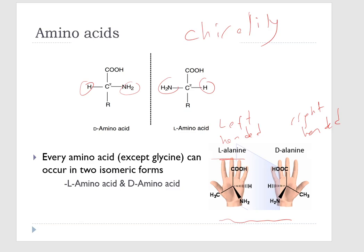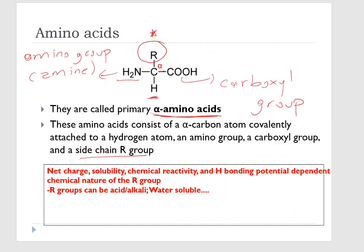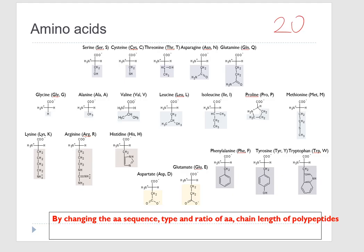Glycine is the exception — it's the simplest amino acid. It has no stereoisomers because it has two hydrogen atoms attached to the central carbon atom, so the R group is hydrogen. Only when all four attachments are different can we have stereoisomers. Because of these two hydrogen atoms, there are no stereoisomers of glycine.